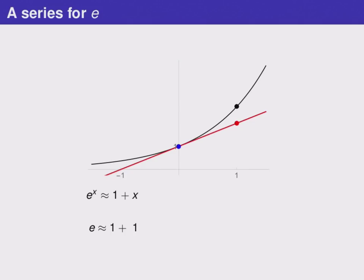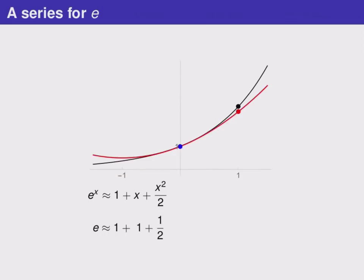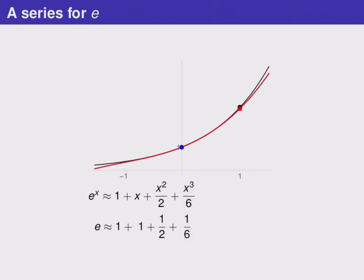But we don't need to stop here. We can find not only a tangent line, but even a tangent quadratic. This quadratic shares the same point, (0, 1), the same slope as e to the x, but it also has the same concavity as e to the x at x equals 0. That gives it a much better match for the shape of the curve e to the x. By substituting x equals 1 into this quadratic, we get a better estimate for the value of e, and you can see that the red and black dots have gotten closer together. We can also find a tangent cubic with the same point, slope, second derivative, and third derivative at x equals 0, making it an even better match for the shape of the curve, and again we get a better estimate for the value of e.